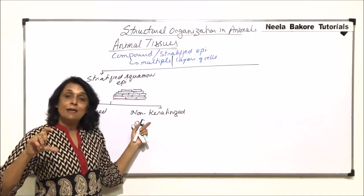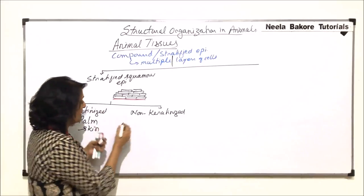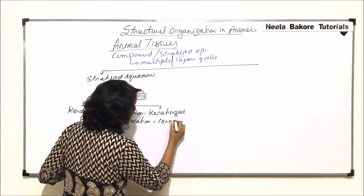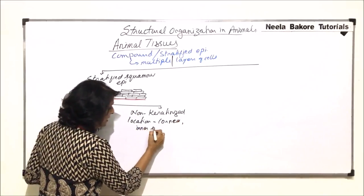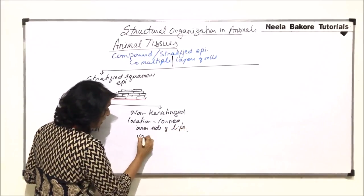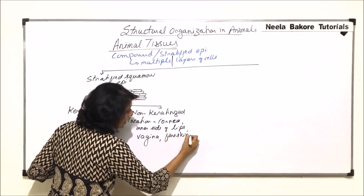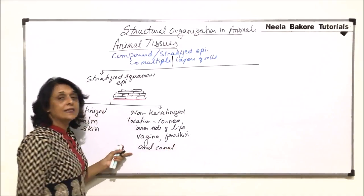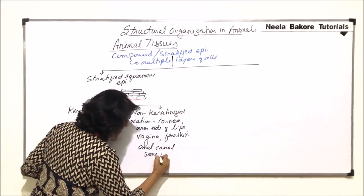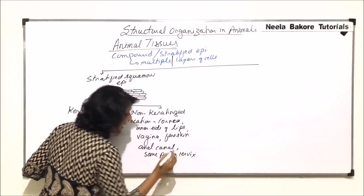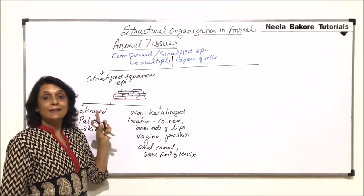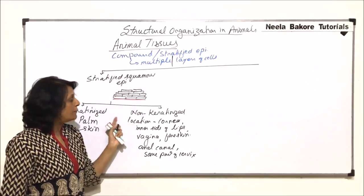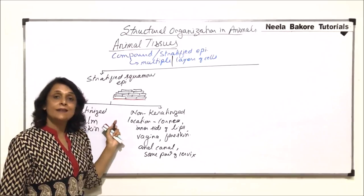Non-keratinized stratified squamous epithelium would be multiple-layered, but there would be no deposition of keratin. The locations where we find these are: the cornea of our eye, the inner side of lips, vagina, foreskin — that is, the skin at the tip of the penis — anal canal, and some part of the cervix. These are the areas where we find multiple-layered squamous epithelium that is stratified, but there is no keratin deposition.